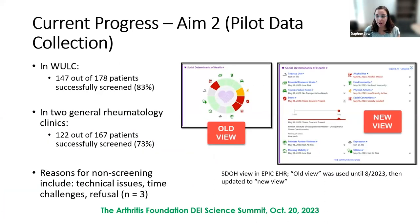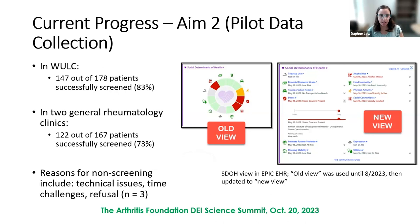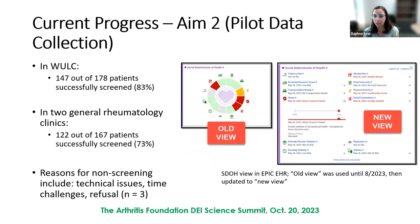So far, we've screened 83% of eligible patients since February 6th in our lupus clinic, and 73% of eligible patients in two general rheumatology clinics. Reasons for non-screening are mostly technical issues such as Wi-Fi being down or patients arriving late. Only three patients have outright refused the screening, which we were really excited and impressed to see. The result of the screening in the EPIC electronic health record is shown on screen.